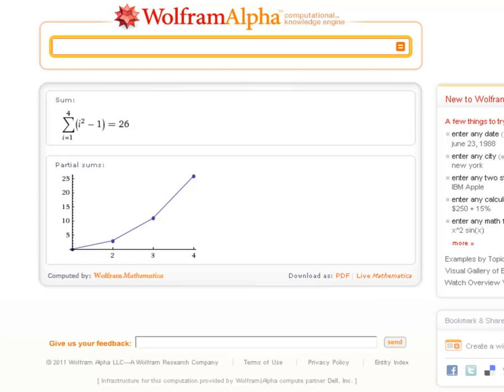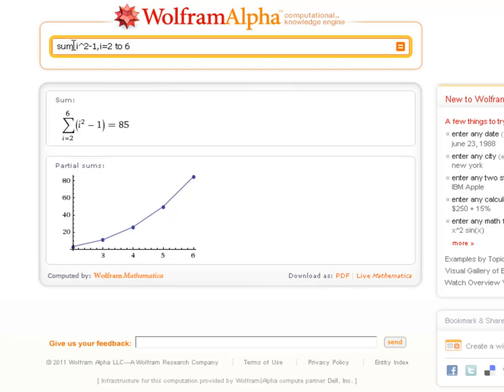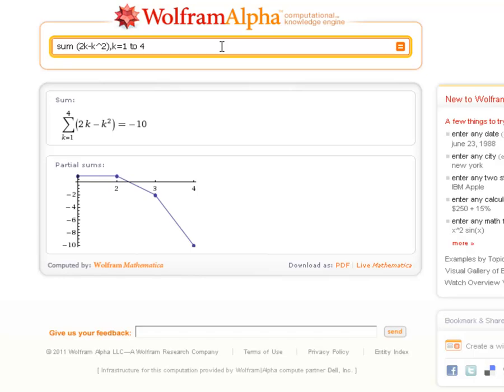The second example is the sum from i equals 2 to 6 of i squared minus 1. So I type sum, and we'll have i squared minus 1, and I have i equals 2 to 6. And that gives us 85, which I do remember calculating. And then the third example was sum of 2k minus k squared. And I put it in parentheses because that's the way I did it on the video. You don't have to with Wolfram Alpha. k equals 1 to 4. And that gives us negative 10, which we actually never computed. That didn't look familiar, but that's why. We never computed its value.